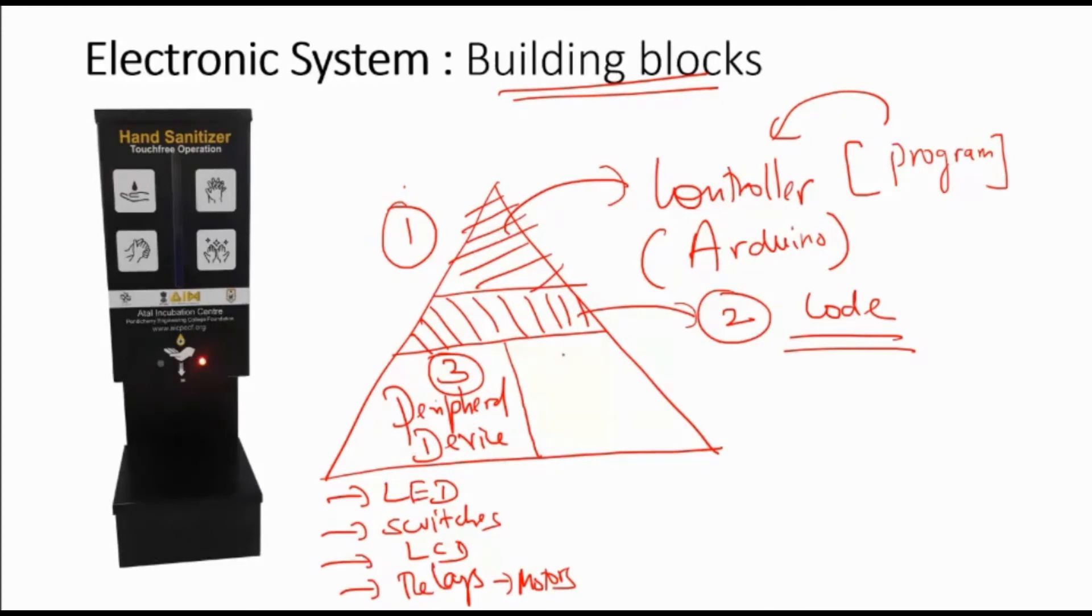The fourth one is of course the sensor. Sensors are used to know what is happening around the system. They act as eyes, nose, ears of the system. There are various sensors available to sense various parameters.